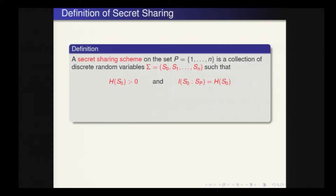In this work, we present a new framework based on information theory. The definition we consider of secret sharing is information-theoretic, and we model the shares as discrete random variables. For us, a secret sharing scheme on a set P of participants is a collection of discrete random variables: one describing the secret and the others describing the shares, such that the entropy of the secret is greater than zero. Here the entropy is the Shannon entropy, and the mutual information between the secret and all shares equals the entropy of the secret, meaning the participants can recover the secret.